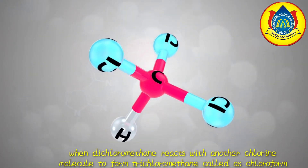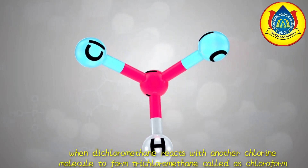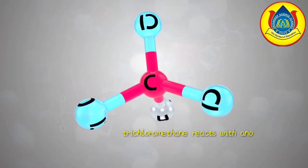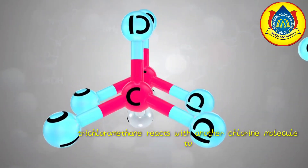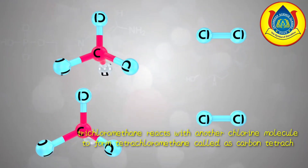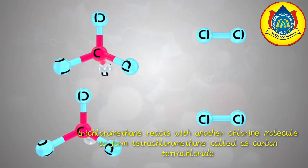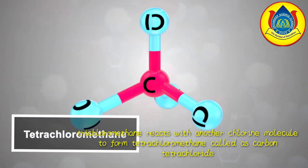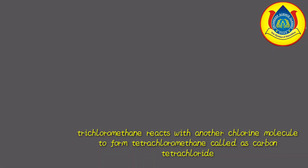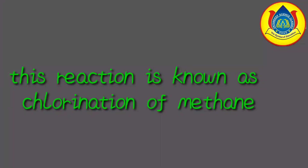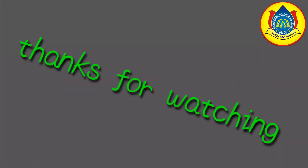Chloroform again reacts with another chlorine molecule in presence of sunlight to form carbon tetrachloride, which is also known as tetrachloromethane, an important industrial solvent. This reaction is known as chlorination of methane.